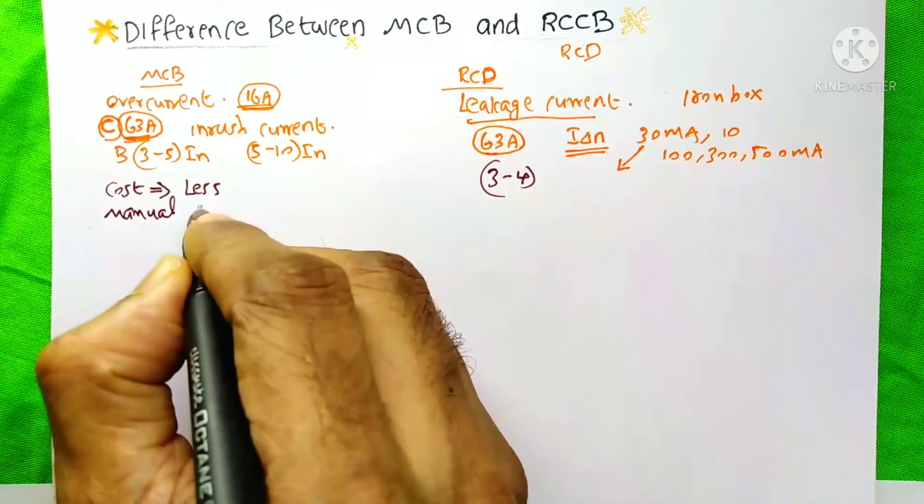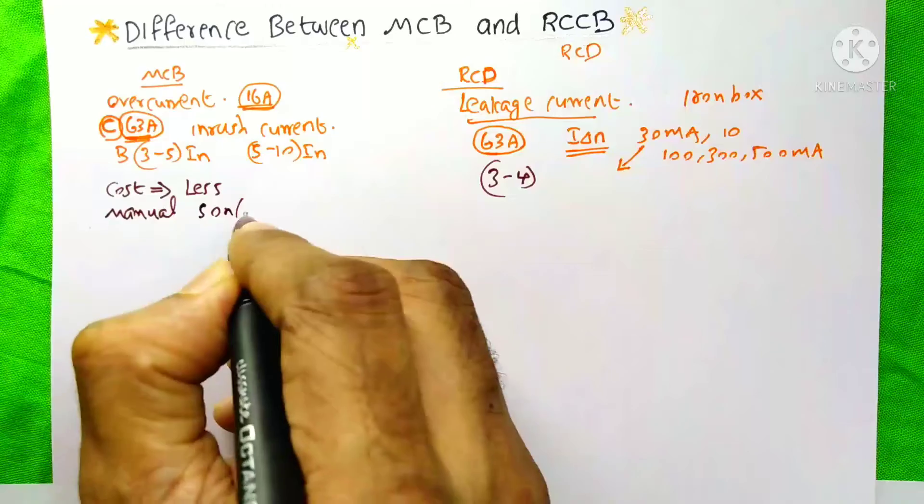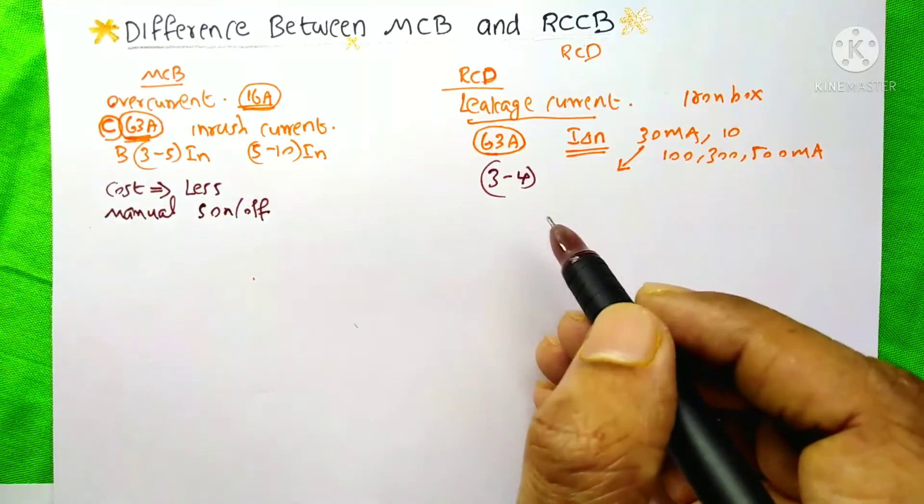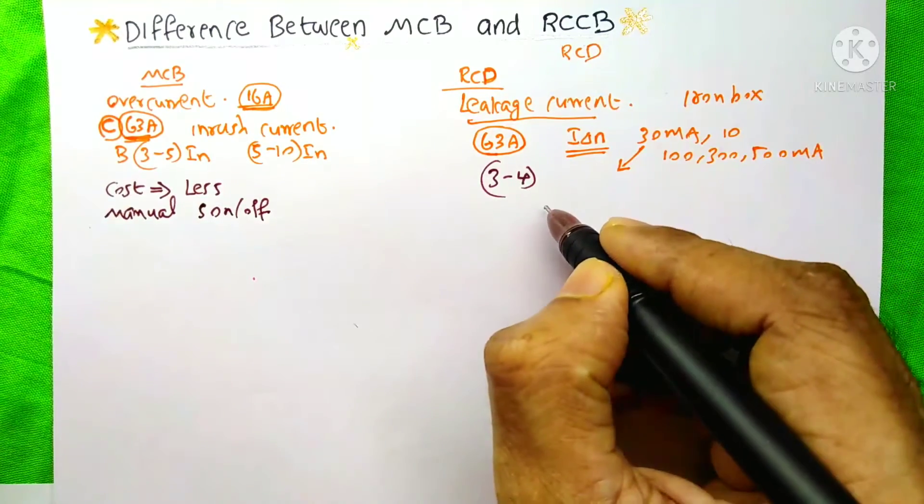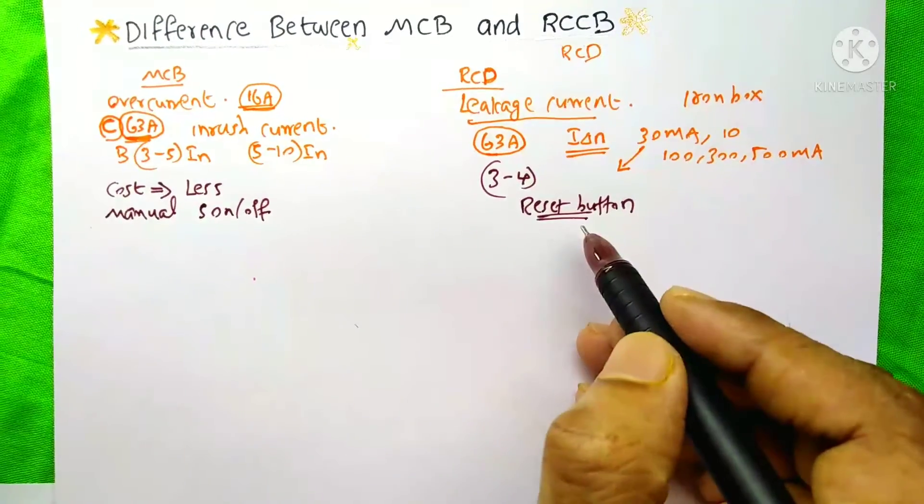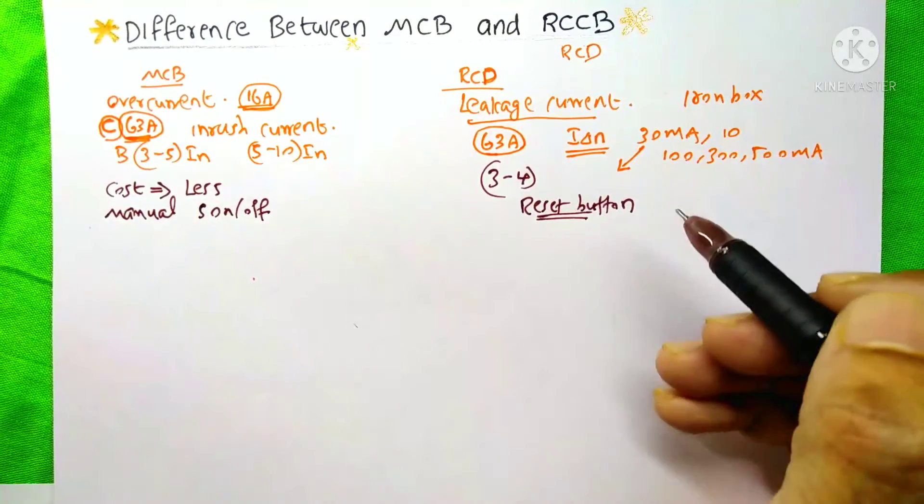You can see a manual switch on or off button on the top of the MCB. On here also on the RCD, you can see the same manual switch on or off button, but here we can see an extra setup, that is the reset button. With the help of this reset button, we could check the working condition of the RCCB.